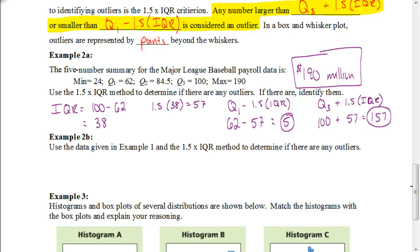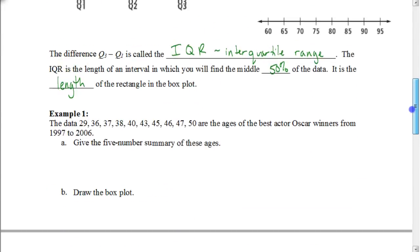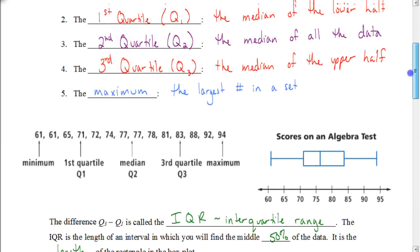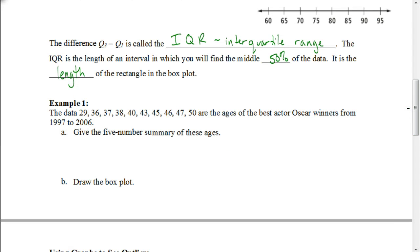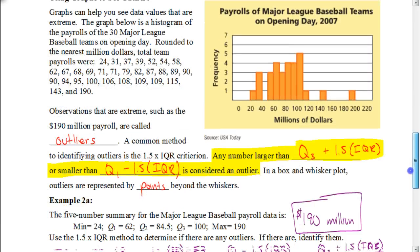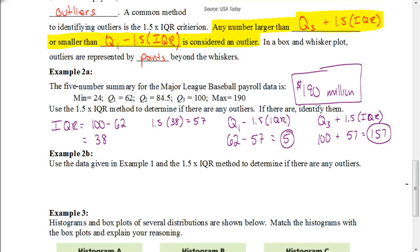Now I want you to take the data given in example one and use the one and a half times IQR method to determine if there are any outliers. Example one refers back to what we discussed in the previous video. Take the five number summary you had from that video and see if there are any outliers. Go ahead and pause the video, then hit play when you're ready to check your answer.